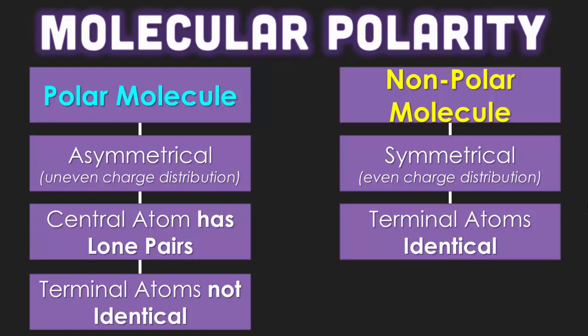In a polar molecule, we're going to see an asymmetrical shape, so uneven charge distribution of those electrons. There is going to be a central atom that has a lone pair on it, at least one. And then there are going to be terminal atoms, not necessarily identical.